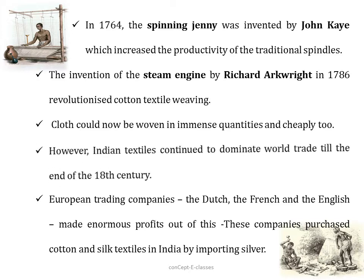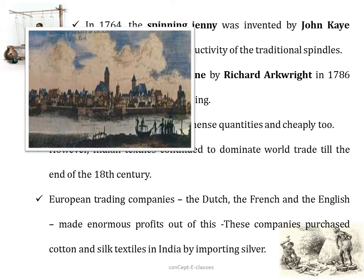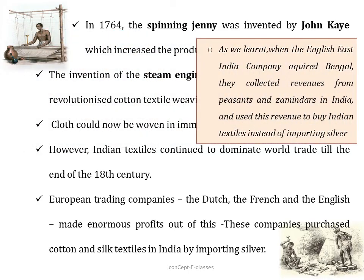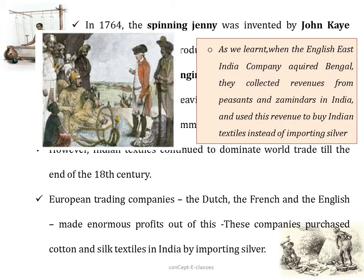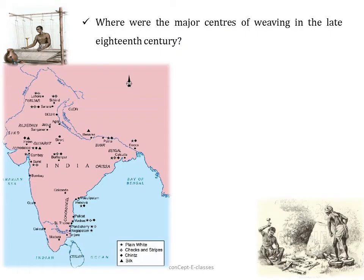However, Indian textiles continued to dominate the world until the 18th century, and European trading companies — the Dutch, the French, and the English — made enormous profits from them. These companies purchased Indian textiles by importing silver. Later, when the East India Company acquired Bengal, they collected revenues from peasants through zamindars and used that revenue to buy Indian textiles instead of importing silver, as discussed in Chapter 2.